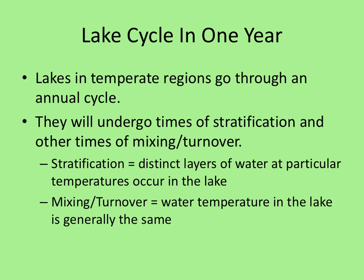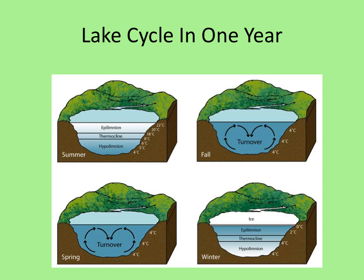Now we're going to talk about what happens to the lake in one year's time — what happens during summer, fall, winter, and spring. Lakes go through an annual cycle, and basically the lake will either be doing one of two things: stratifying — meaning there will be layers of water sorted according to temperature — or mixing, where there are no layers and the water is all mixing together.